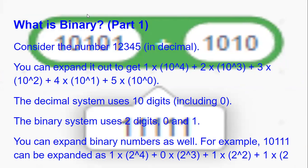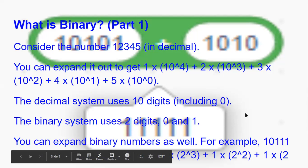What is binary? First, consider the number 12345 in decimal. You can expand it out to get 1×(10^4) + 2×(10^3) + 3×(10^2) + 4×(10^1) + 5×(10^0). The decimal system uses 10 digits including 0, whereas the binary system just uses 2 digits, 0 and 1.